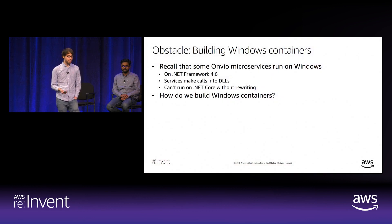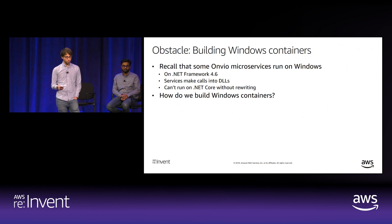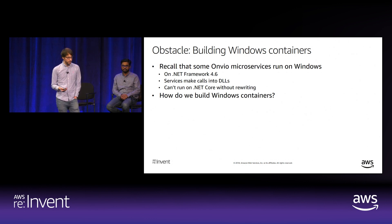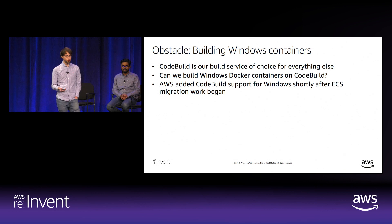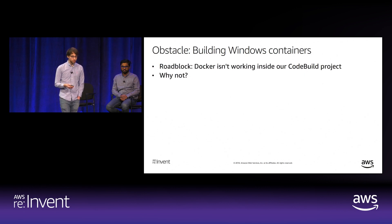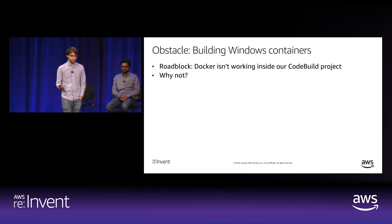We ran into an obstacle: some Onvio microservices use .NET Framework 4.6 and make calls to Windows Dynamic Link Libraries, which would require a rewrite to run on .NET Core. Before asking developers to rewrite, we asked: could we build Windows containers instead? We were already using AWS CodeBuild for Linux containers, and AWS had just added Windows support for CodeBuild, so this sounded promising. However, switching the CodeBuild build type to Windows and running Docker Build turned out to be unsuccessful—Docker was not installed and all attempts to install and run it proved unsuccessful.